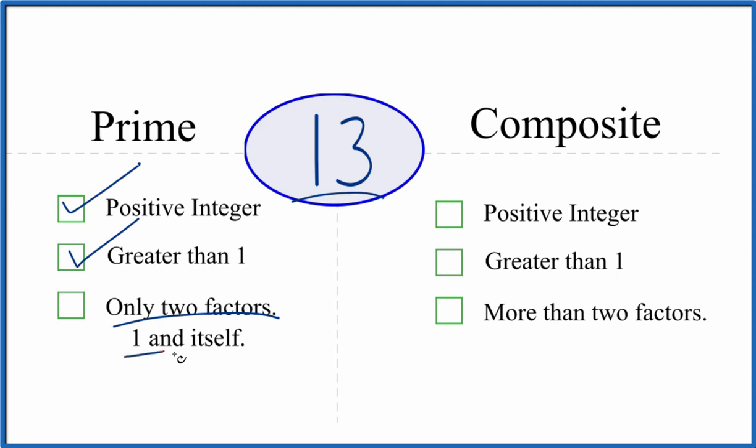And are there only two factors, 1 and 13, that divide evenly into 13? We know that 1 times 13 equals 13.